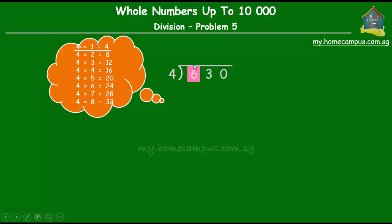We put the 1 here. 4 times 1 gives us 4 and leaves a remainder of 2. 6 minus 4 is 2. That's the first step, which gives us a quotient of 100 and there is a remainder of 200.